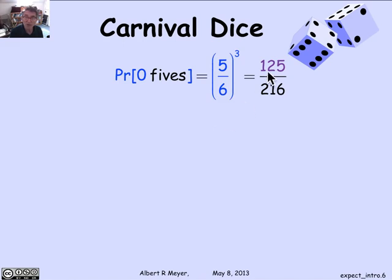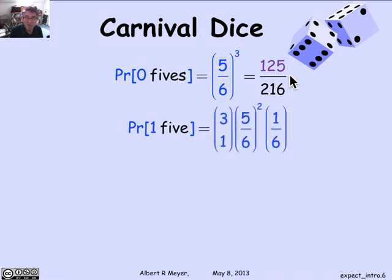I'm writing these numbers over 216 to make them easier to compare. What's the probability of one five? The probability of any single sequence of die rolls with a single five is (5/6)(5/6)(1/6), and there are three-choose-one possible sequences of dice rolls with one five and the others as non-fives.